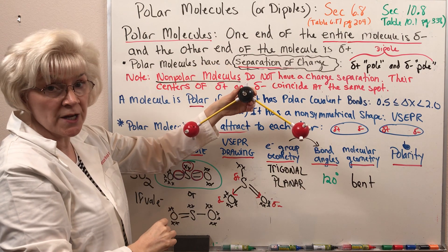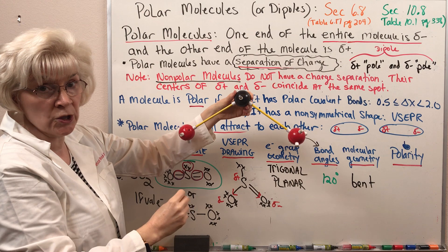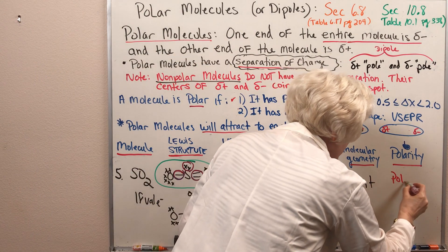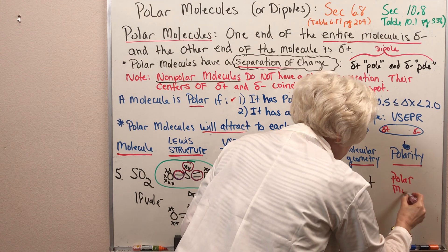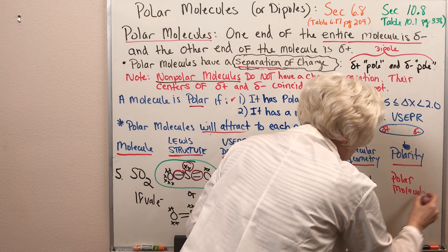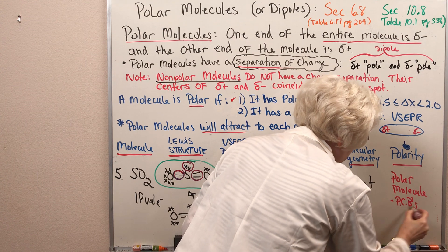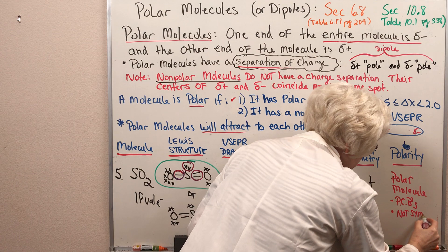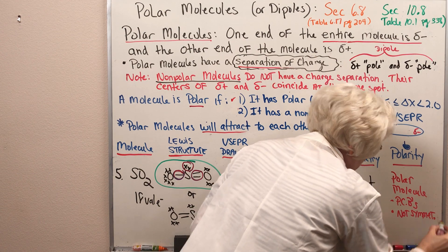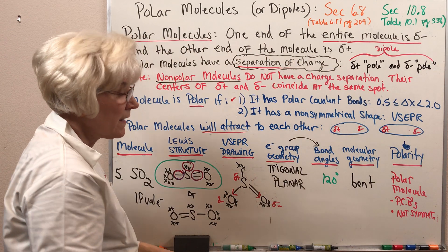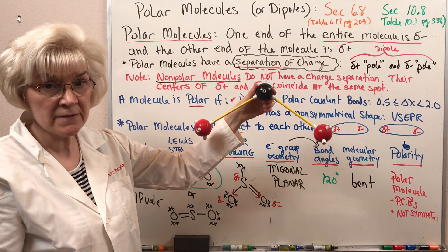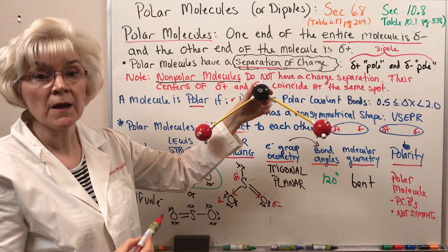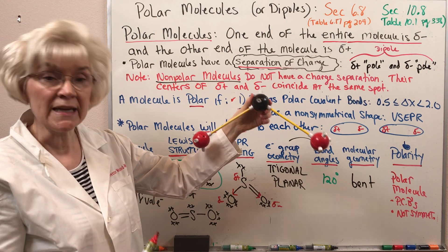Therefore, sulfur dioxide is a polar molecule because it has polar covalent bonds and it is not symmetrical. The centers of partial positive and partial negative charge in sulfur dioxide are split from each other — it's a dipole.